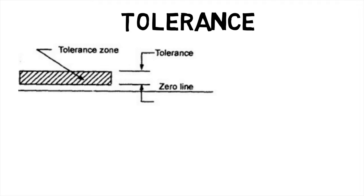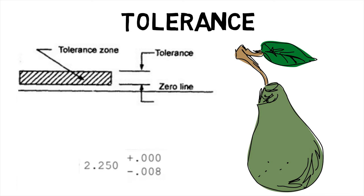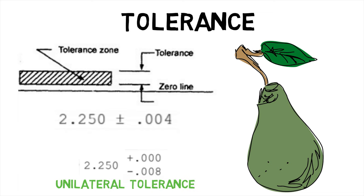The term tolerance refers to the difference between the upper limit and the lower limit of a dimension. In other words, tolerance is the maximum possible variation in a dimension. The tolerance may be of two types: unilateral or bilateral. When the tolerance is allowed on one side of the nominal size, it is said to be a unilateral system of tolerance. When the tolerance is allowed on both sides of the nominal size, it is said to be a bilateral system of tolerance.